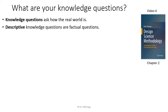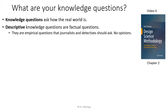Descriptive knowledge questions are factual questions. They are the empirical questions that journalists and detectives should ask, and they are not opinions — they should describe facts. An opinion would be an interpretation of an event, for example whether it is a good or bad thing, or an inconclusive hypothesis about what probably happened even if you didn't see it. An opinion is an inconclusive statement about which there can still be discussion. The answer to a descriptive question should not be an opinion, but a fact. This is very important because nowadays on social media, the distinction between opinions and facts seems to have been forgotten.